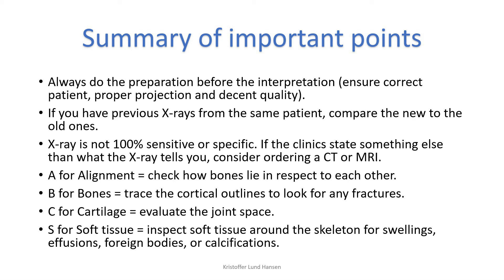Let's do a quick recap of the more important points. Before the main evaluation, remember to do the preparation: check that we have the correct patient, the correct x-ray, the correct projection, and that the quality is sufficient. If you have any previous x-rays from the same patient, use those to compare. Remember that x-rays are not always very sensitive or specific, so a diagnosis cannot always be confirmed or disconfirmed based on x-rays alone. In A for alignment, we check the alignment of the bones in respect to each other. In B for bones, we trace the cortical outline of all the bones and look for any breakage in the cortex, which can indicate a fracture. In C for cartilage, we evaluate the joint space for any pathologies — the most common being osteoarthritis. In S for soft tissue, inspect the tissue around the skeleton for any swellings, effusions, foreign bodies, or calcifications.